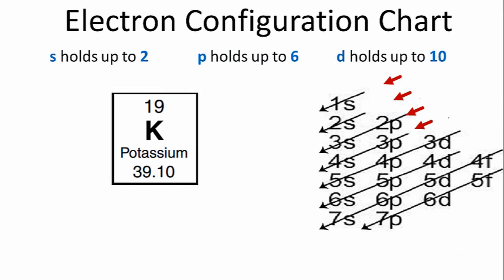We'll use the chart on the right to help us. We go down the first row, and we have 1s. S orbitals can hold up to 2 electrons, so we'll put 2 electrons in that first orbital there.